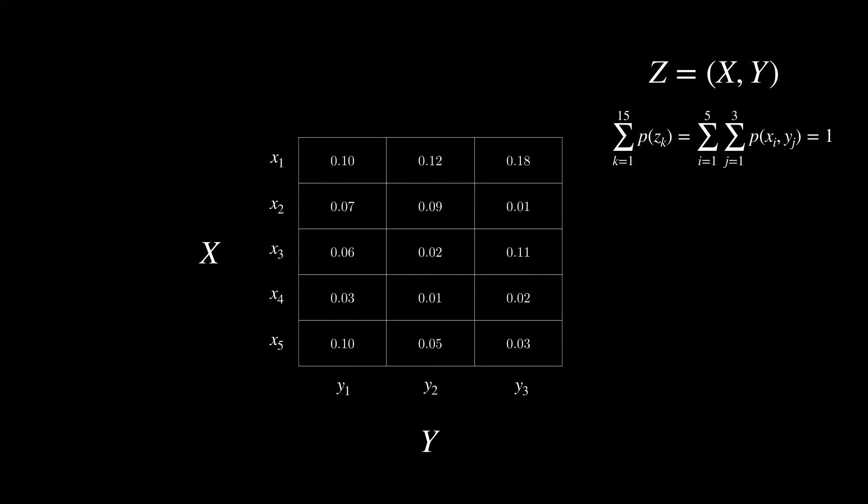In a multivariable setting like this, the marginal probability of one of the random variables, say x, taking a particular value, regardless of the value of any of the other variables, is denoted as just p of x.